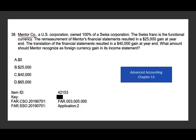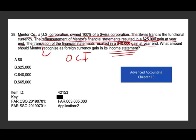Mentor Company, a US corporation, owned 100% of a Swiss corporation. The Swiss franc is the functional currency. The remeasurement of Mentor's financial statements resulted in a $25,000 gain at year end. The translation of the financial statements resulted in a $40,000 gain at year end. What amount should Mentor recognize as a foreign currency gain in its income statement? The translation gain of $40,000 goes into OCI — it does not go on the income statement. The remeasurement goes into the income statement. Therefore, the answer is B, $25,000.